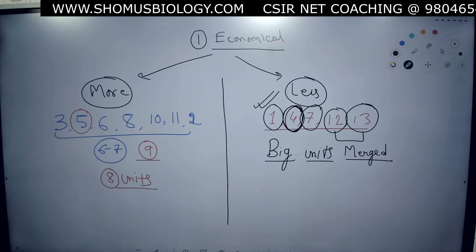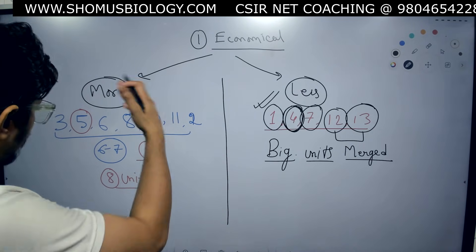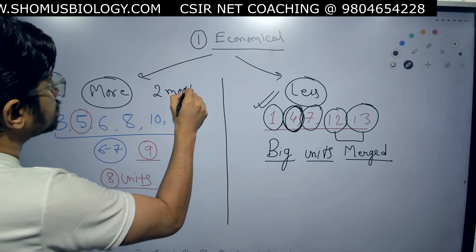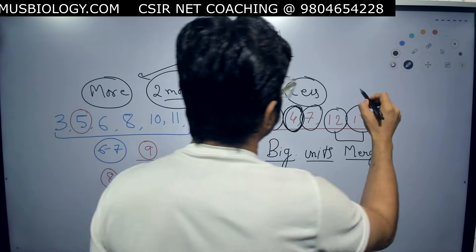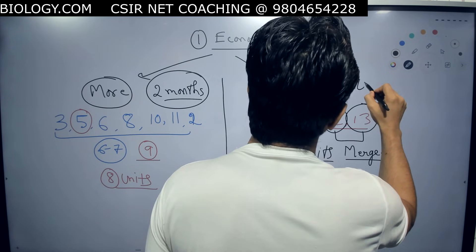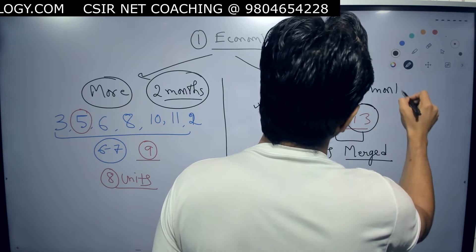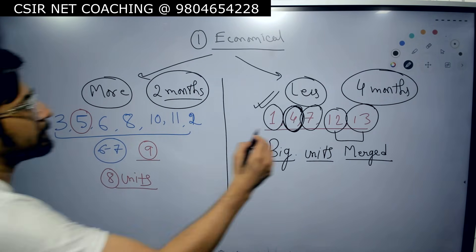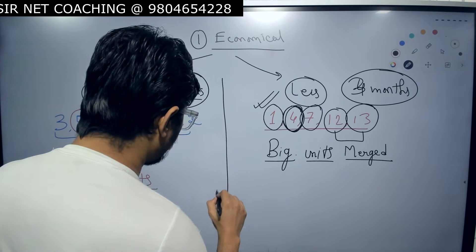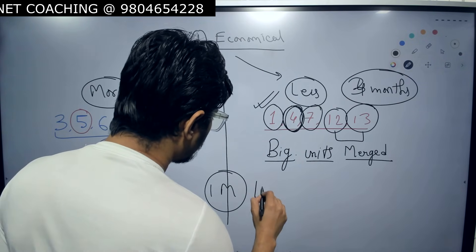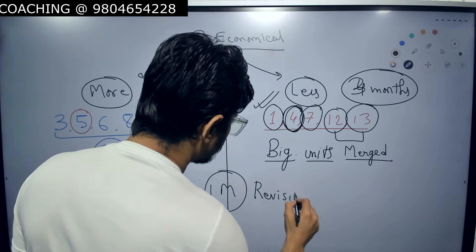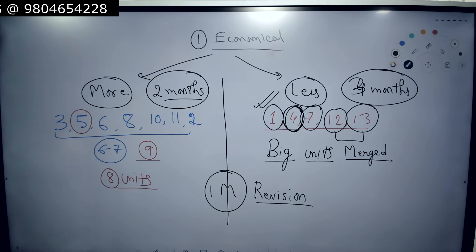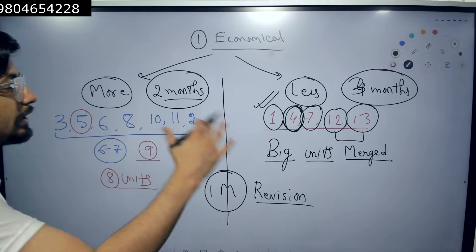So this is a simple division of economical and less economical units. If you divide your six-month preparation time frame, you can prepare the more economical units in two months and the less economical units in four months. Alternatively, use two months plus three months, keeping one month for revision. This is one approach you can take.